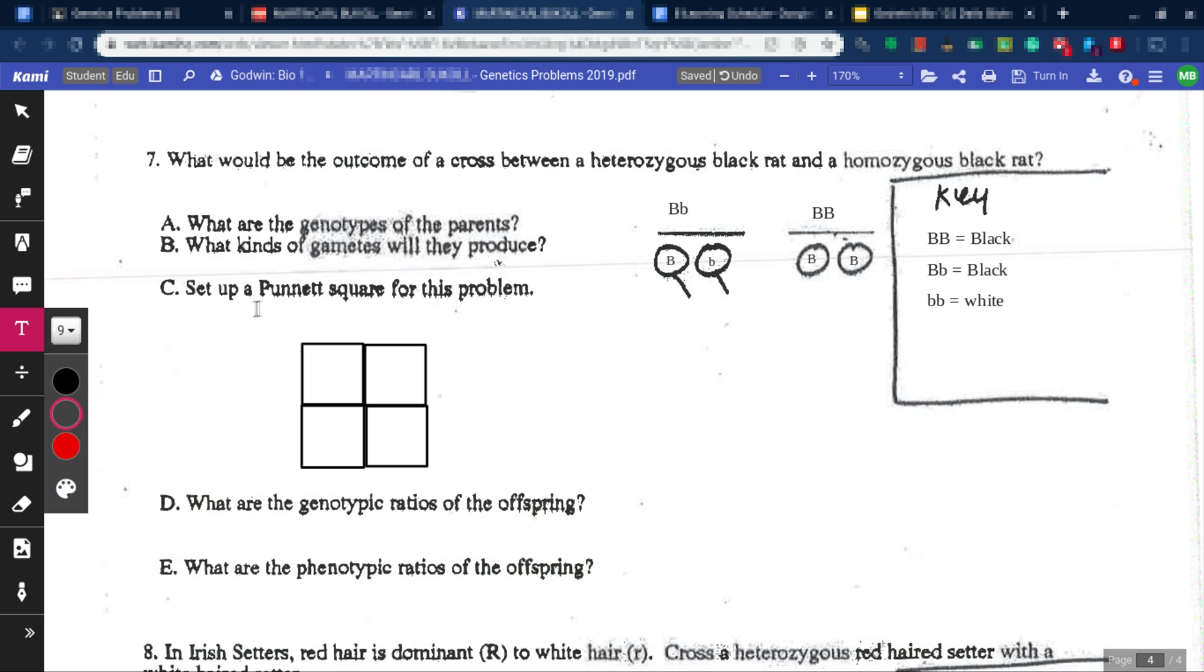Go back to the text box and we're going to put big B, little B, and then big B and big B. Alright. So this is big B big B, big B little B, big B big B, and big B little B. Alright, perfect.